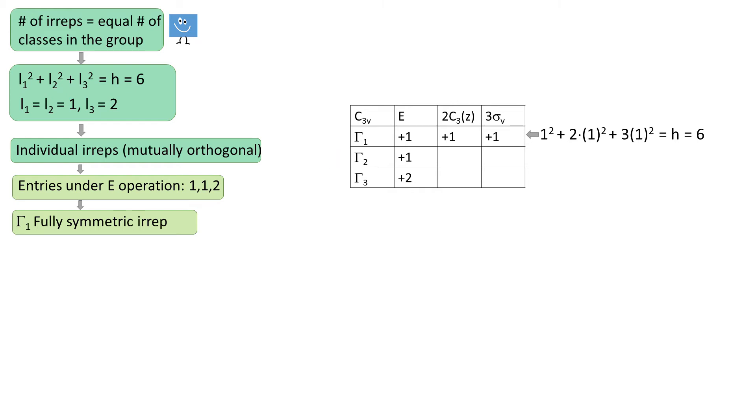Now let's focus on tau2. Because it's a 1-dimensional EREP, the entries in the table of this EREP are either 1 or minus 1. We know that tau2 has to be orthogonal to tau1, therefore tau2 has to have minus 1 under the 3 operations. We have plus 1 under E, so the only way to give tau2 3 negative entries is to put minus 1 under the reflections.